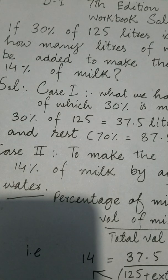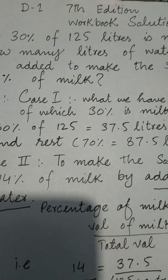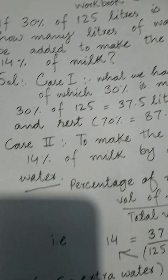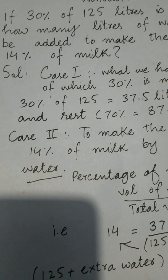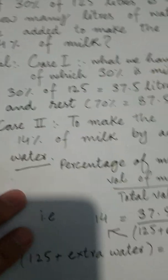So we have to find out how much extra water is needed to make the percentage of milk 14%. If we reduce it, then we will reduce the percentage of milk. Then we need to add extra water.